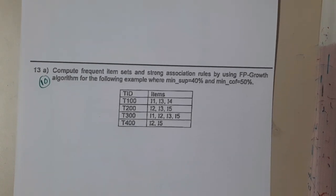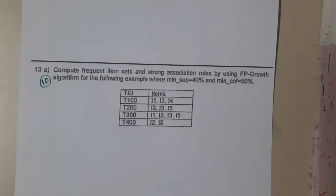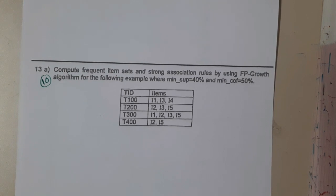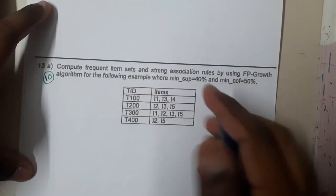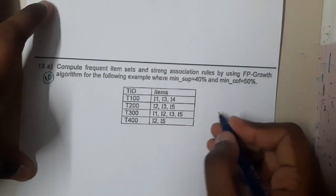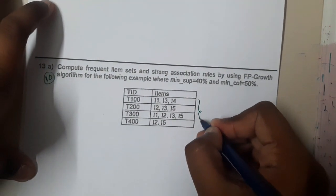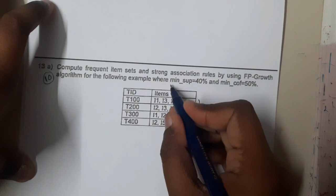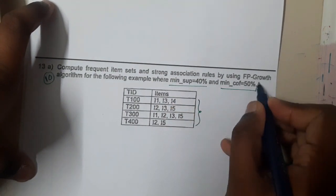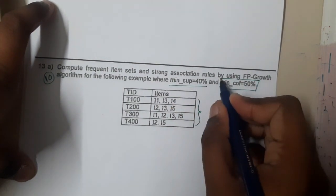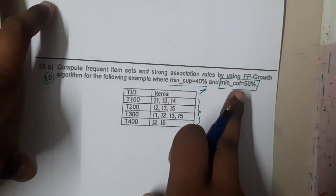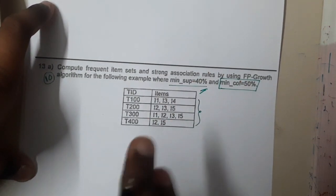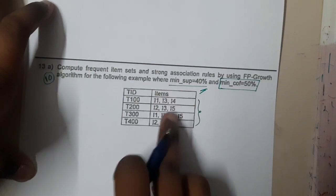Hello guys, we are back with our next lecture. In this lecture let us go through one more problem on the FP-Growth tree. In this question they gave four transactions and also gave the minimum support with the confidence. In our last lecture we saw only with the support count, so in this lecture let us learn how to solve it along with the confidence.